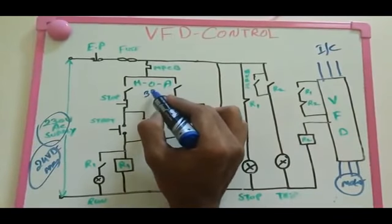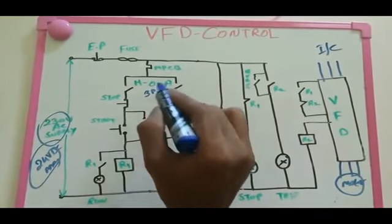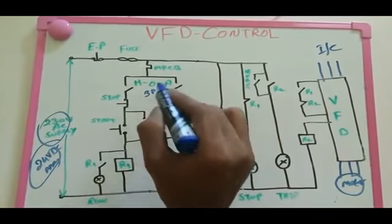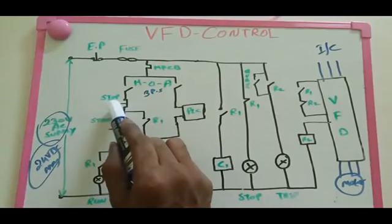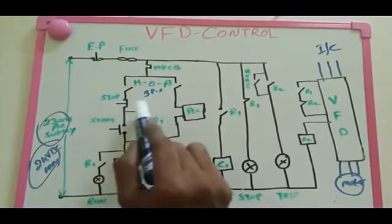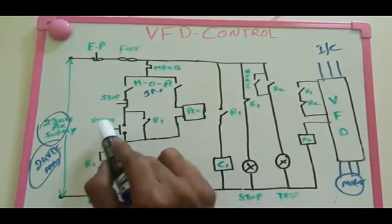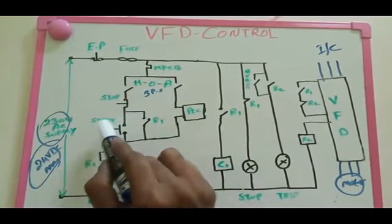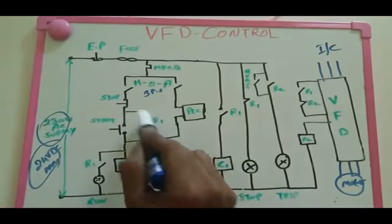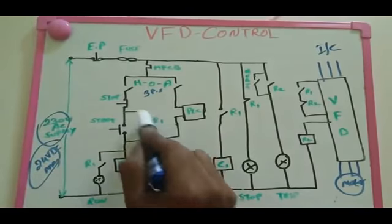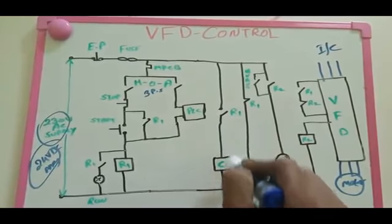Here is the three-position switch - that means hand, off, and auto. You can select three modes: hand operation, off, or auto operation. Here we select hand. This is the stop push button. This part is called hand operation. When you press start, the R1 coil is energized. When you release the stop push button it goes back, so that's why we put the R1 NO contact here so the circuit remains continuously switched on.